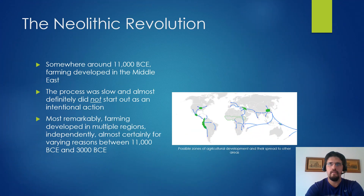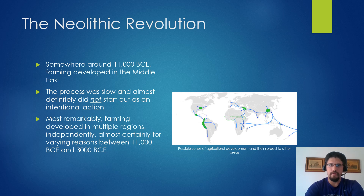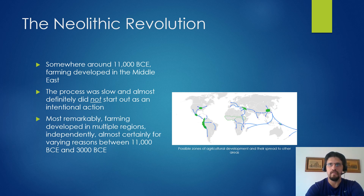There are three hugely important events in the history of humanity in terms of transforming our species: the Neolithic Revolution, the Columbian Exchange, and the Industrial Revolution. Those other two come much later. The Neolithic Revolution is a must-know — it's simply the development of farming, also often called the Agricultural Revolution.